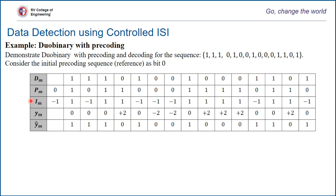im is the NRZ modulated output of pm: 0 is represented as minus 1, 1 is represented as plus 1. This is the sequence thrown into the channel. When not corrupted by additive Gaussian noise, this is the same sequence received at the receiver. ym, the output of the receiver, is generated as im plus im-1 — since it is duobinary, it is a combination of two binary sequences. im-1 is the reference. ym = im + im-1: (plus 1 + minus 1) = 0, (1 + minus 1) = 0, (1 + 1) = plus 2, and so on.